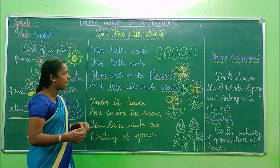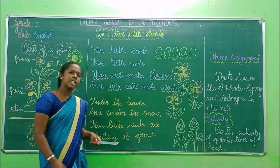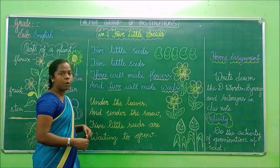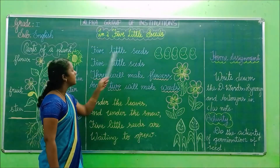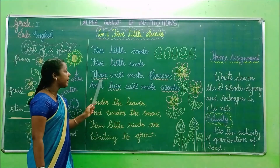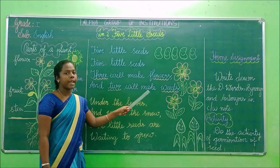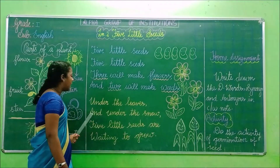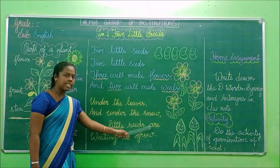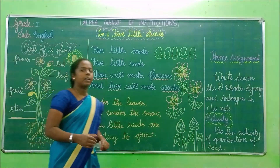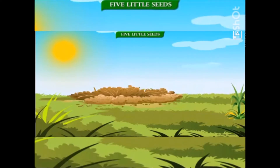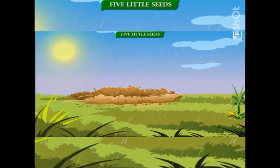Have we all understood, children? In this class we have learned the first two stanzas. The next class will cover the next two stanzas. Shall we recite it once again? Five little seeds, five little seeds. Three will make flowers, and two will make weeds. Under the leaves, and under the snow, five little seeds are waiting to grow.